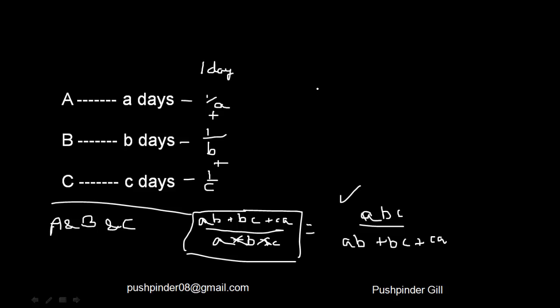For example, if A takes 3 days, B takes 2 days, and C takes 3 days, just substitute into the expression ABC/(AB+BC+CA) and you get your answer. This works for easy basic-level questions — for instance, A takes 10 days, B takes 20 days, together how many days.